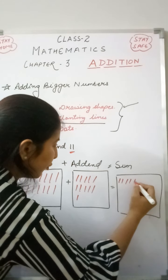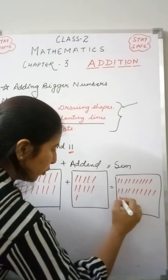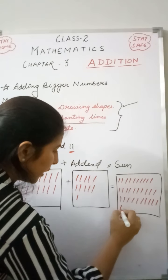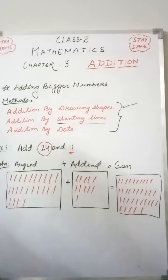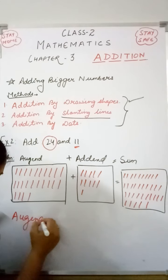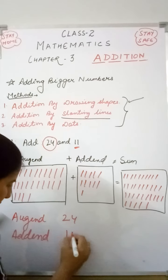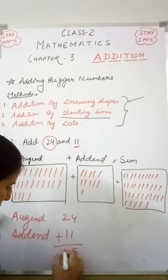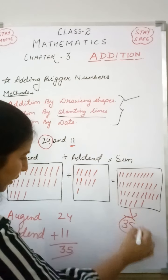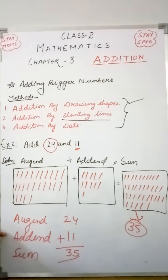Let's draw all 35 slanting lines in the sum box — counting 1 through 35. We can also verify this with formal addition: Augend is 24, Addend is 11. Adding: 4 plus 1 is 5, and 2 plus 1 is 3, giving us 35. So 35 slanting lines are confirmed. This is the second method: slanting lines.